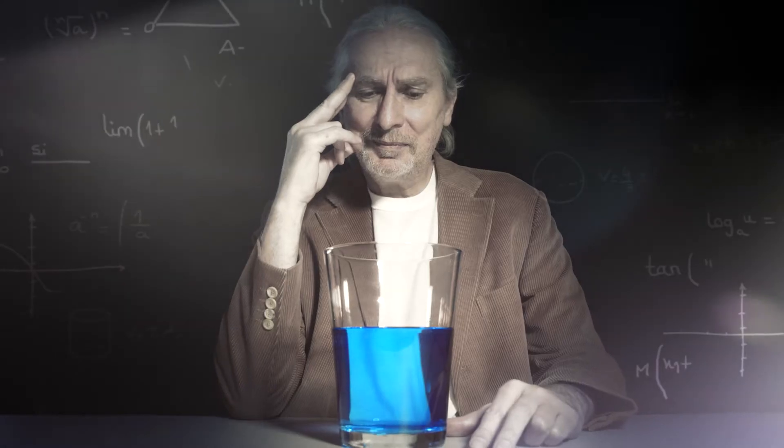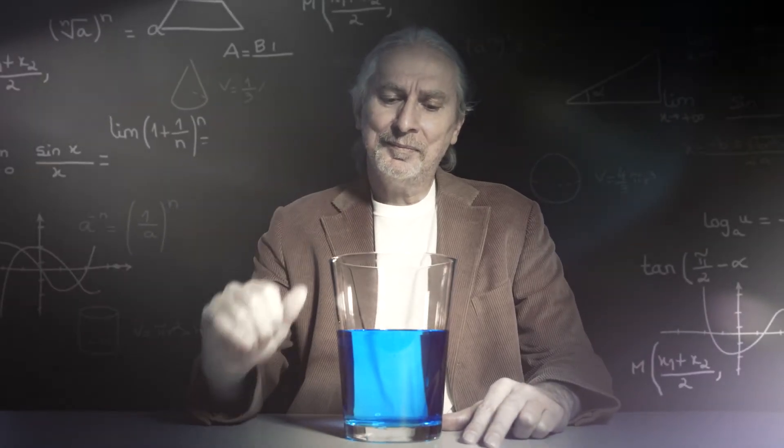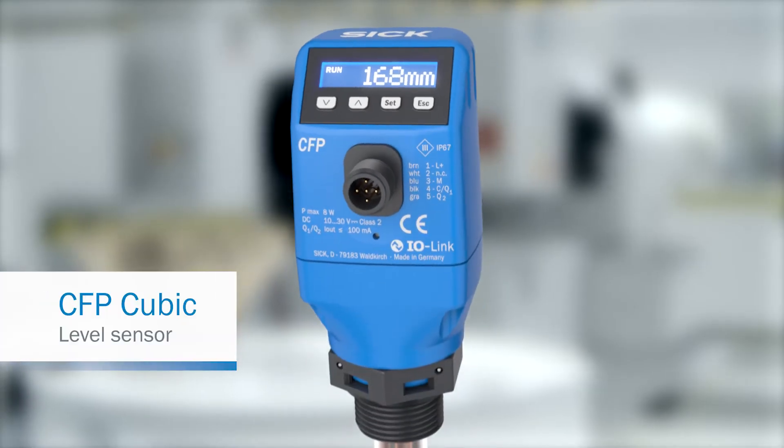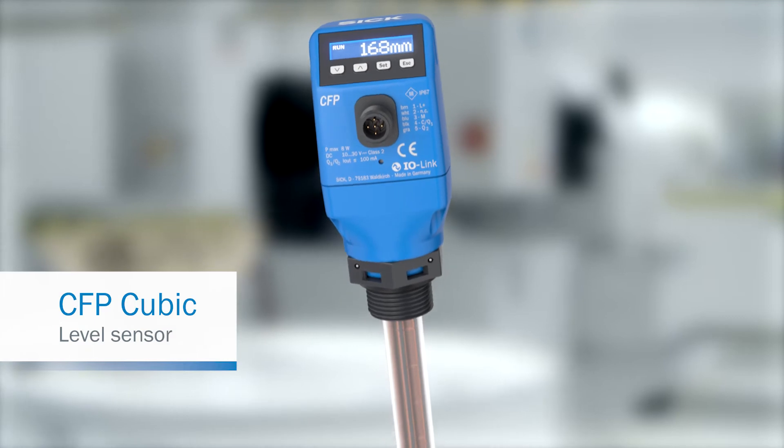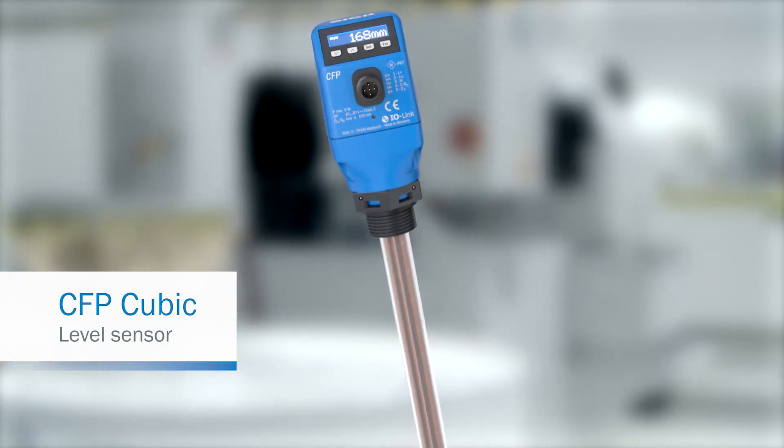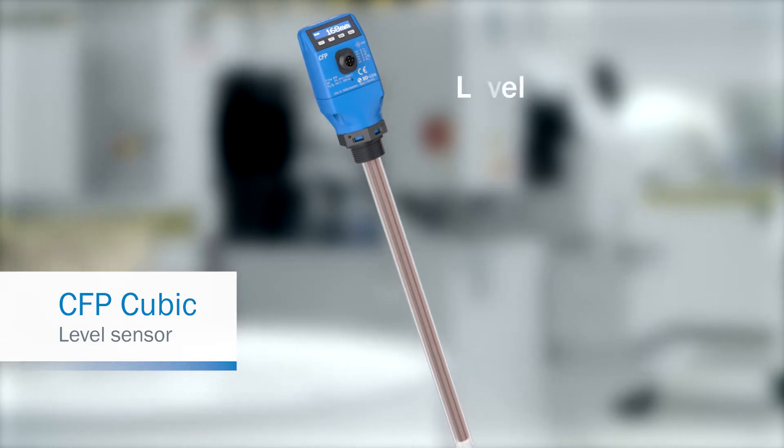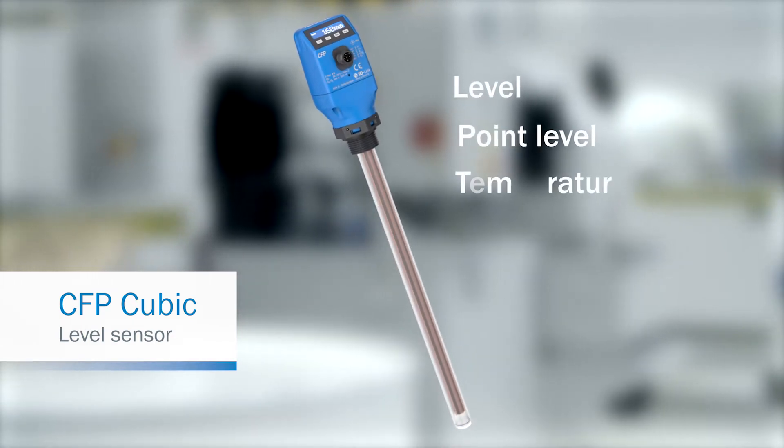Half full or half empty - a question humankind has been asking itself for generations. The new CFP Cubic level sensor has the answer. It combines a whole range of different measuring functions including continuous level measurement, point level measurement, and temperature monitoring in a single product.